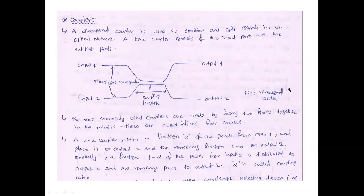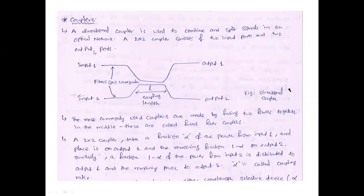Where exactly are these directional couplers used? In this 2×2 coupler, it takes a fraction alpha of the power from input 1 and places it on output 1, with the remaining 1 minus alpha going to output 2. A fraction of 1 minus alpha of the power from input 2 is distributed to output 1, and the remaining goes to output 2. So alpha power goes from input 1 to output 1, and 1 minus alpha from input 2 to output 2.